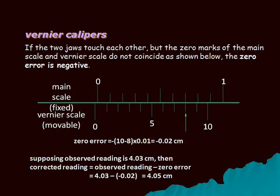Next example: if the two jaws touch each other but the zero marks of the main scale and vernier scale do not coincide, the zero error is said to be negative. Here, the eighth division of the vernier is coinciding with the main scale. Therefore, zero error equals minus (10 − 8) × least count, that is minus 2 × 0.01, which comes to −0.02 centimeters. Supposing the observed reading is 4.03 centimeters, then the corrected reading equals 4.03 minus (−0.02), equal to 4.05 centimeters.